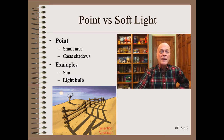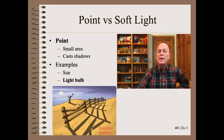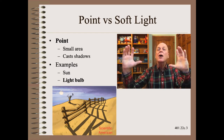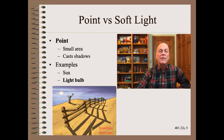What is the difference between point and soft lighting, and why does it even matter? Point lights have a small spherical area and cast distinct shadows. Common examples include the sun and light bulbs. Soft light, on the other hand, has a large spherical area and is relatively uniform. An example is the sun on a cloudy day, where the clouds act as a diffuser.